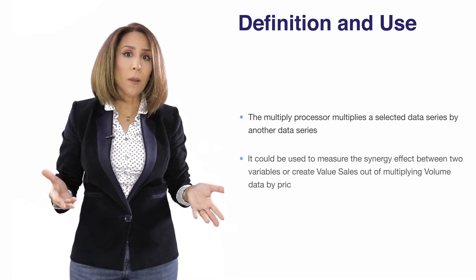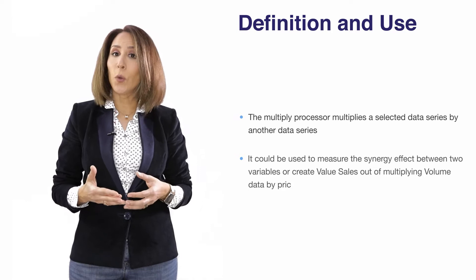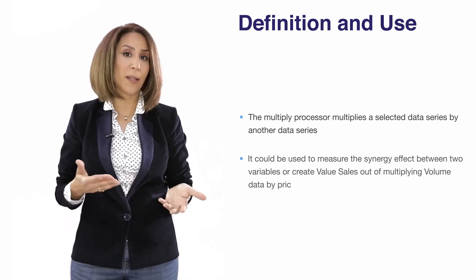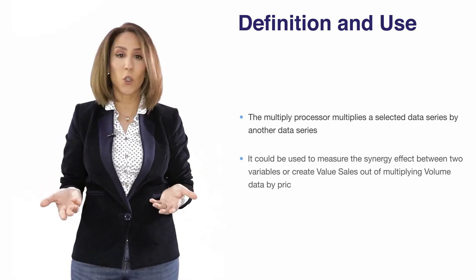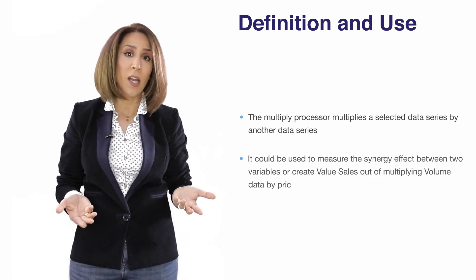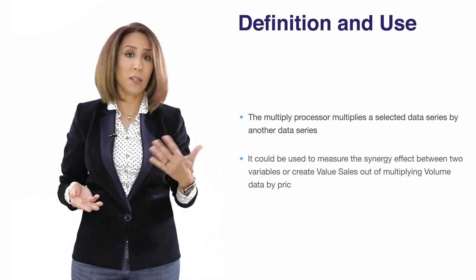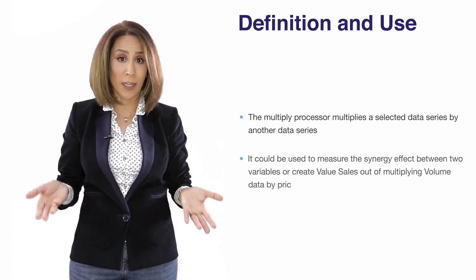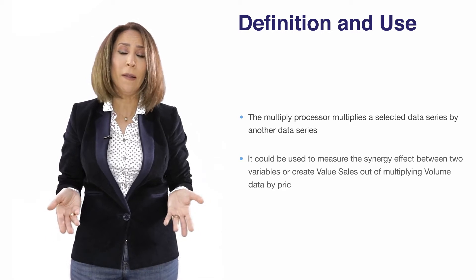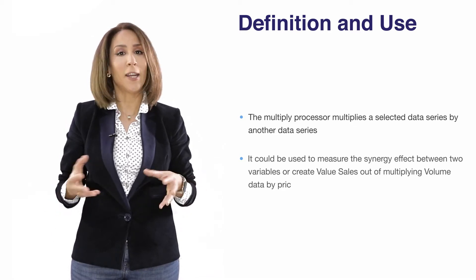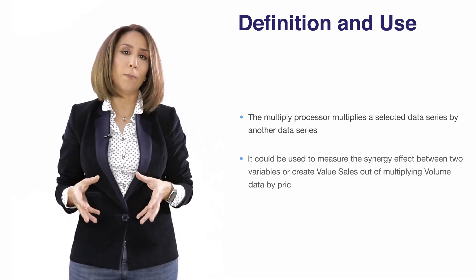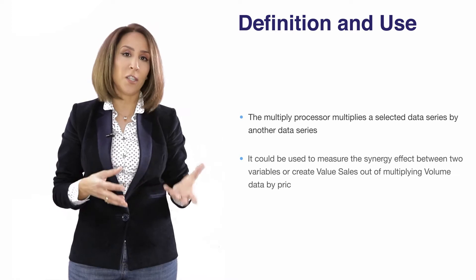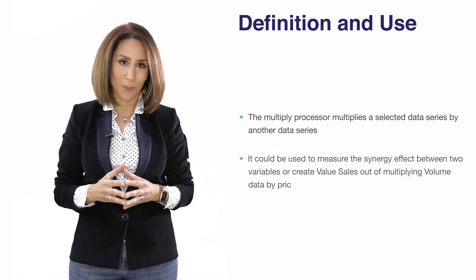For example, you want to create a synergy effect between two variables — for example your paid search and your TV activity. You take the TV GRPs and multiply them by the paid search clicks, and you obtain an interaction effect that helps you measure the synergy between these two variables.